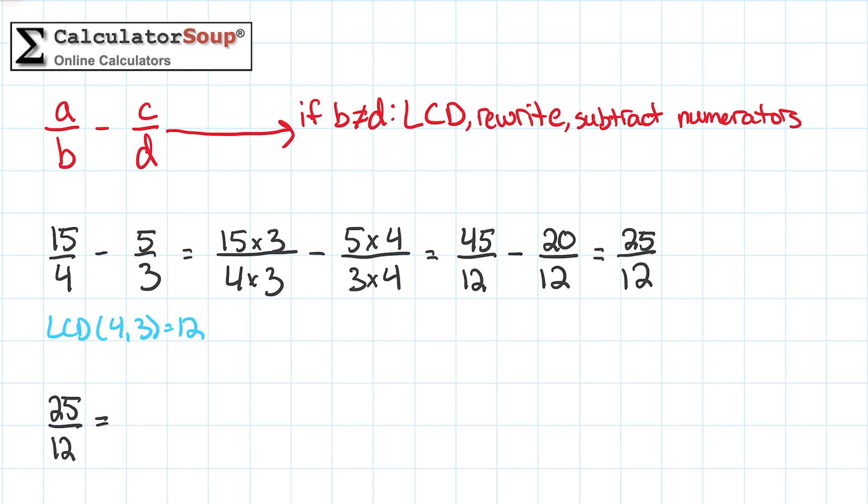25 divided by 12 is 2 remainder 1. So put 2 as the whole number result, and 1 as the new numerator over 12. Our simplified answer is 2 and 1 twelfth.